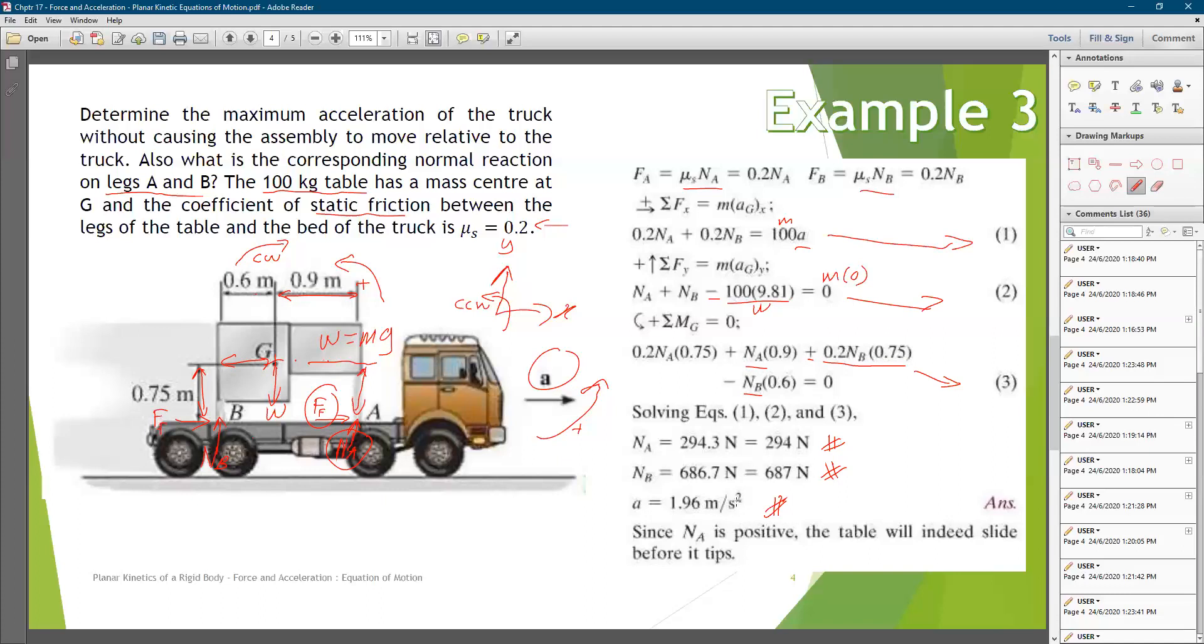If the truck is accelerating higher than this, for example 1.97, what happens is this table will slide to the back, and at some point it will fall off from the back of this particular lorry.